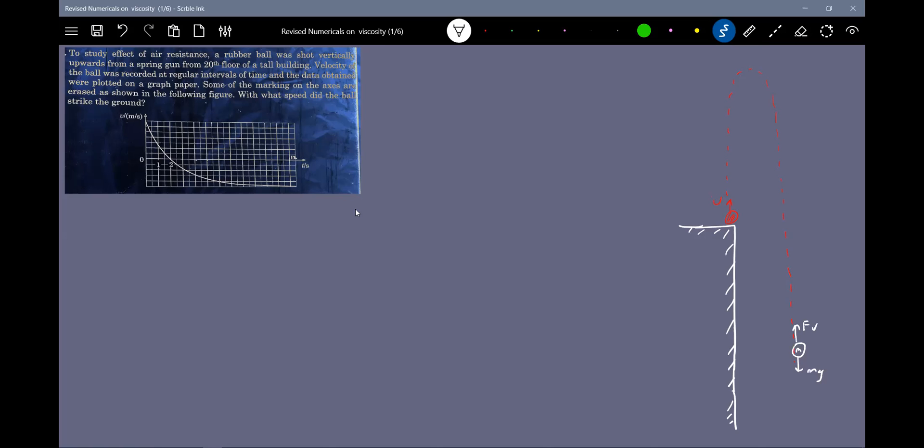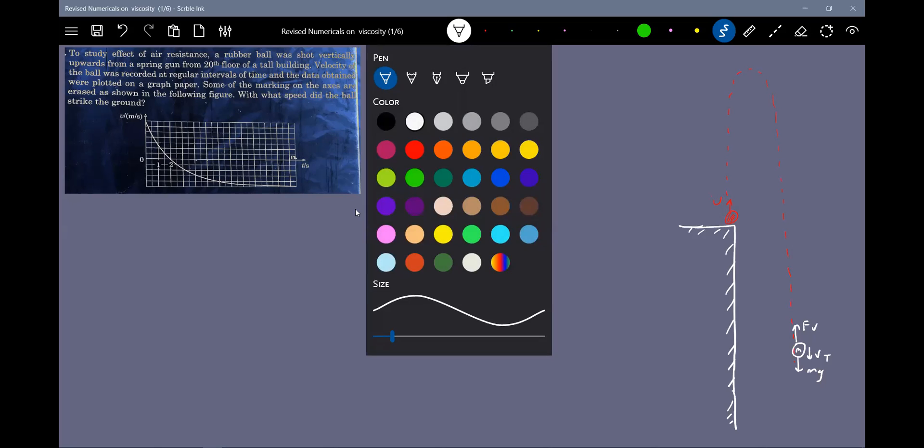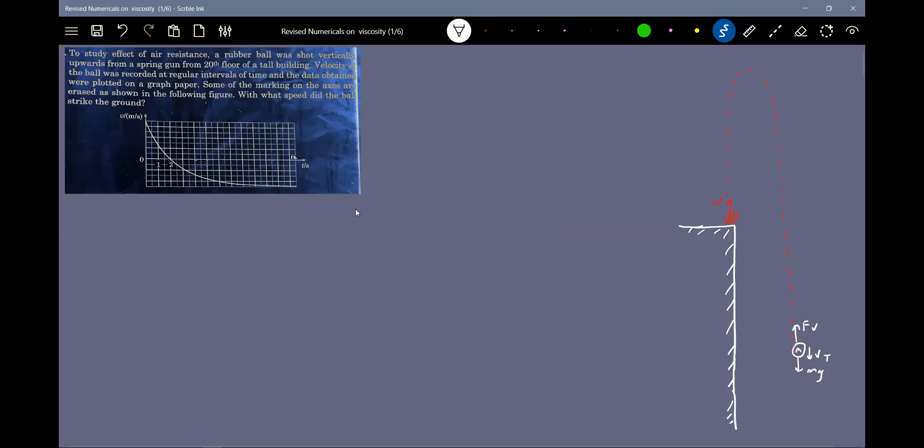Definitely after certain time, it will start moving with a constant speed called terminal velocity. This will happen at t equal to 12 seconds. At t equals zero we projected, and after certain time it will change the direction of motion. If I take upward as positive then downward should be negative, and at one instant it is zero at two seconds.